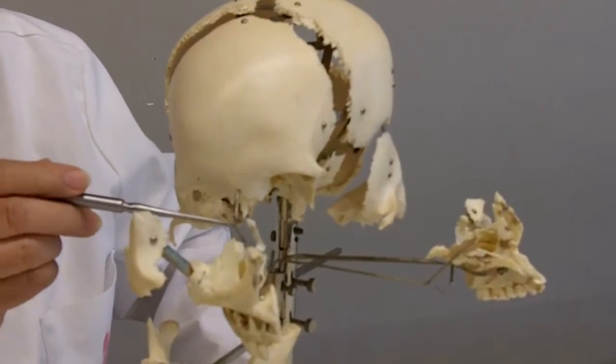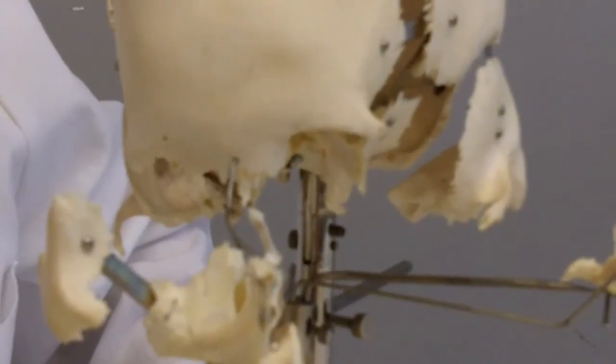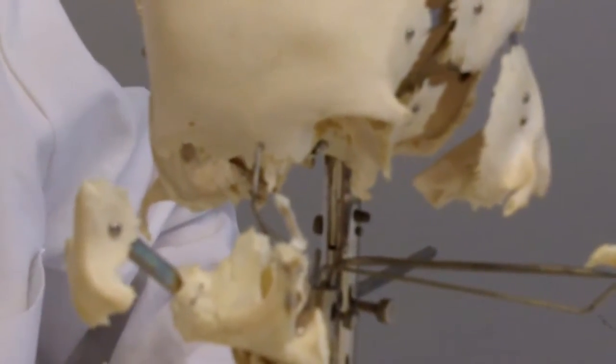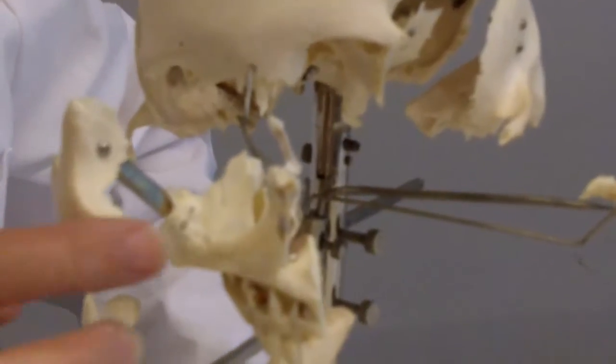Unfortunately missing is the ethmoid bone because it's so fragile and has so many air cells, which are sinuses, that it tends to fall and break off.